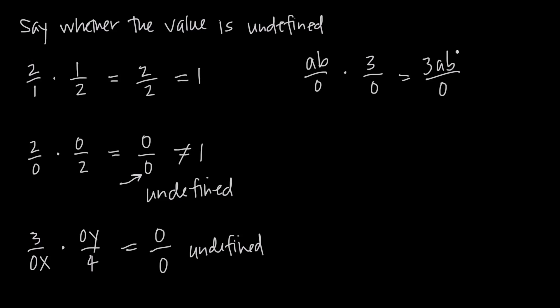And here, even though we have a non-zero value in our numerator, 3ab, we still have a 0 value in our denominator, which is not allowed. And so we say that this is also undefined.